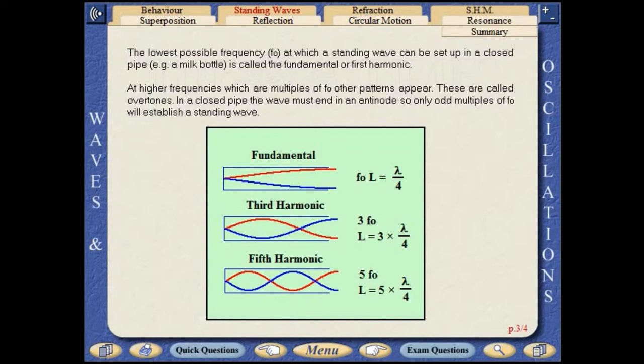The lowest possible frequency at which a standing wave can be set up in a closed pipe is called the fundamental or first harmonic. At higher frequencies, which are multiples of the fundamental, other patterns appear. These are called overtones.